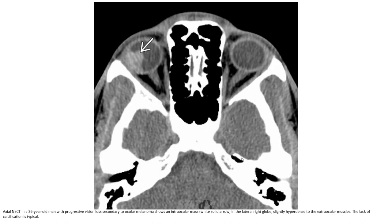This is an axial contrast-enhanced CT in a 26-year-old man with progressive vision loss secondary to choroidal melanoma. An intraocular mass is seen in the lateral choroid, slightly hyperdense relative to extraocular muscle. No calcification is present.